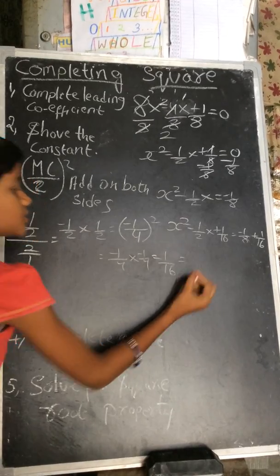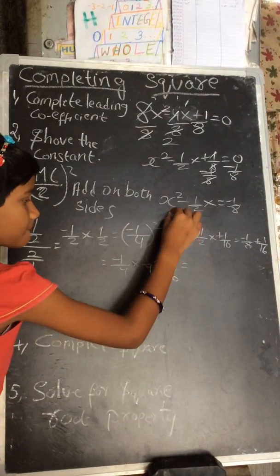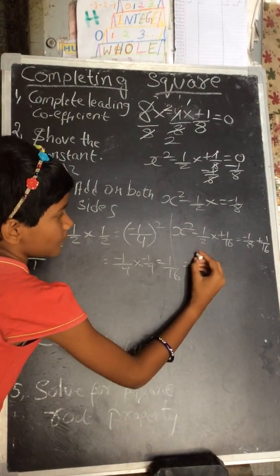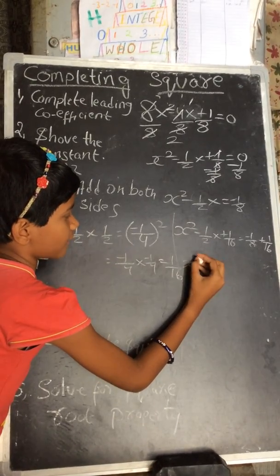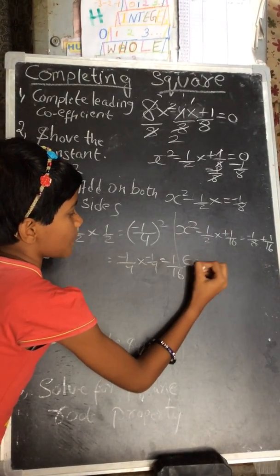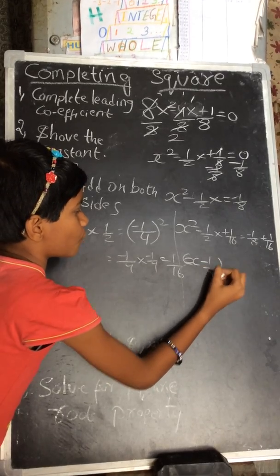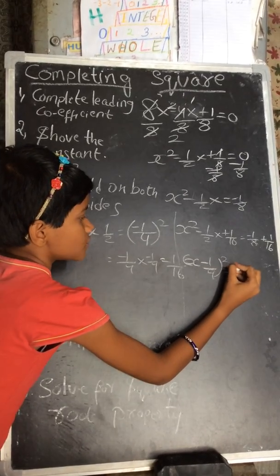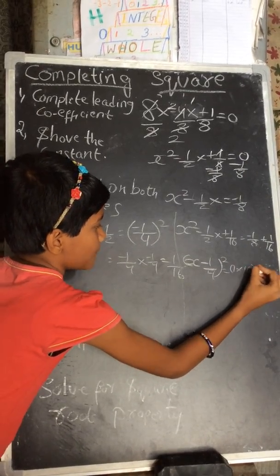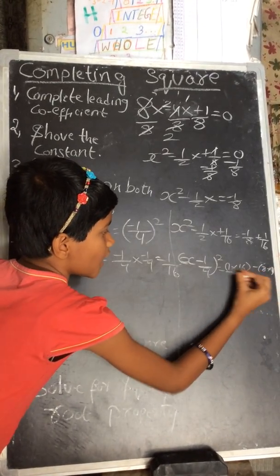That equals x minus 1 by 4 squared equals 1 times 16 minus 8 times 1, all over 8 times 16.